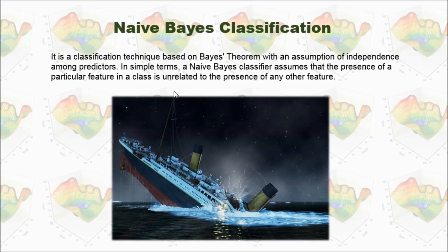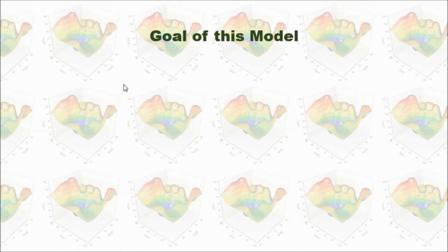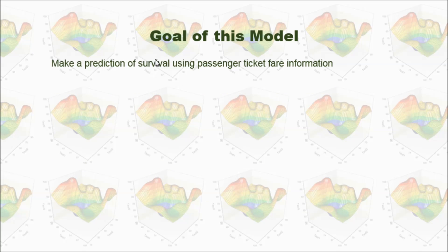Now, let's use this naive Bayes classification for analyzing the surviving rate of the Titanic tragedy. The goal of this model is to make a prediction of survival using passenger ticket fare information.